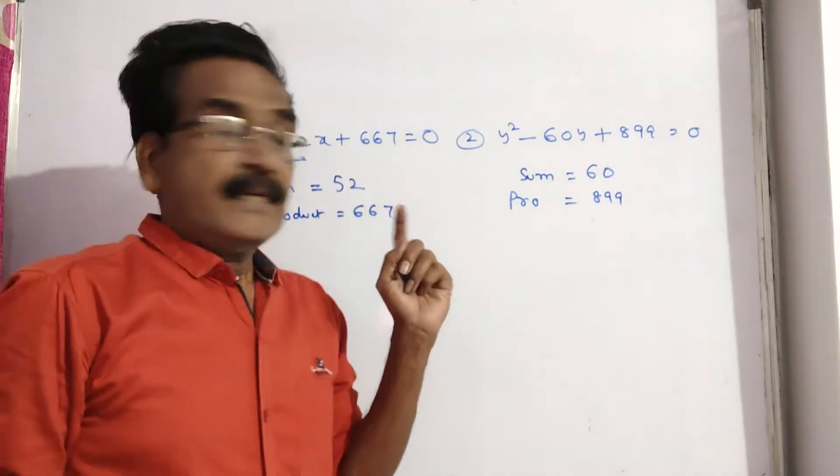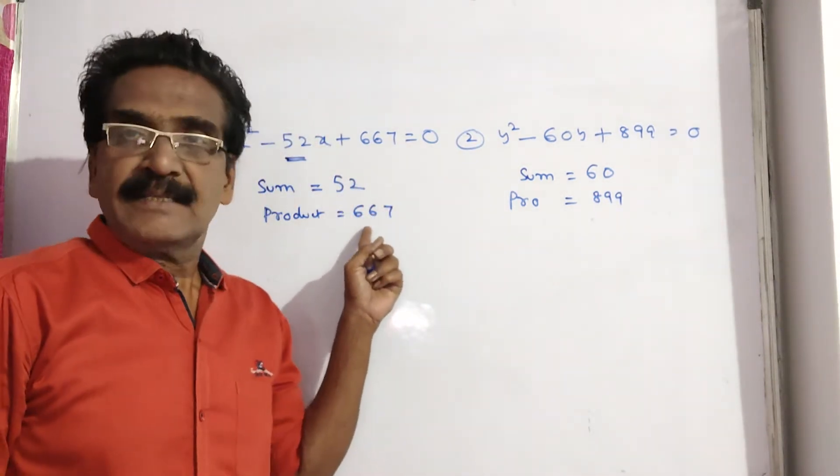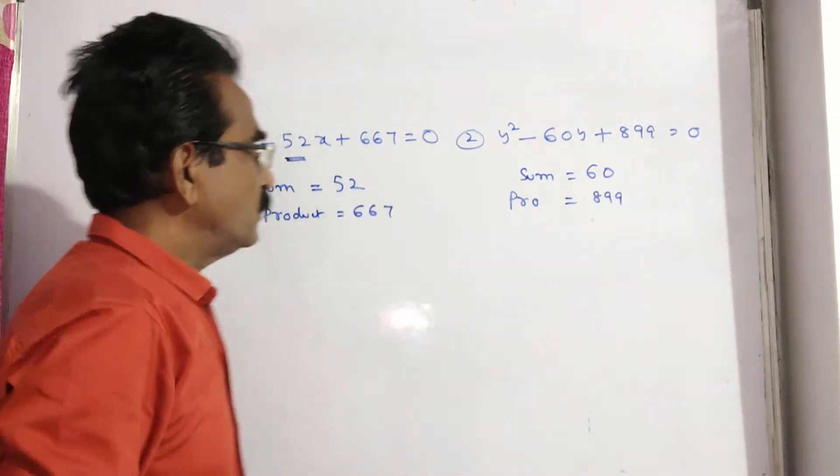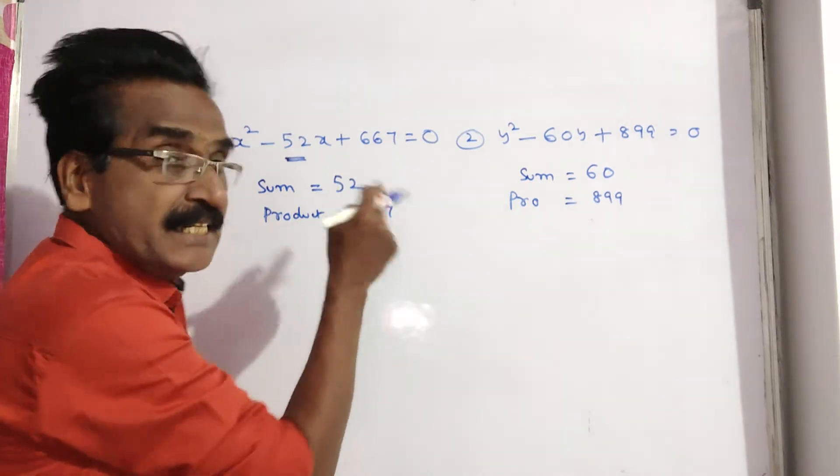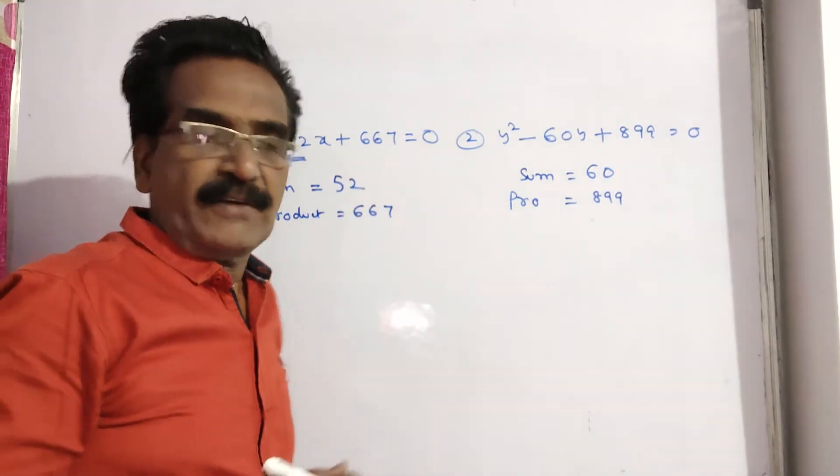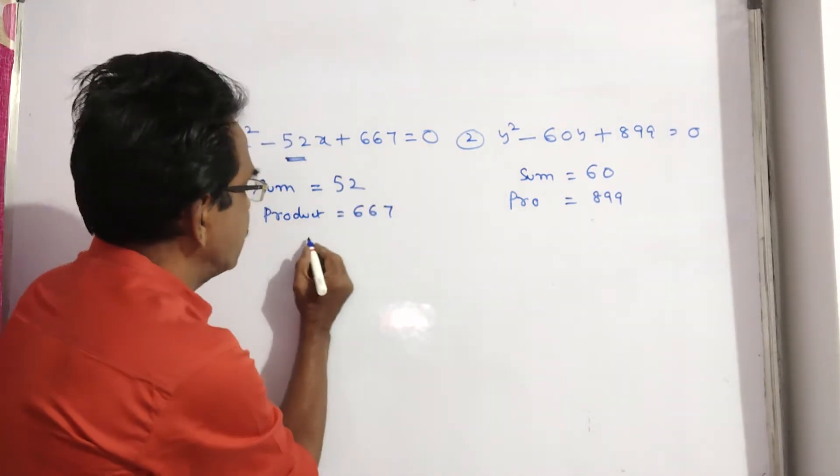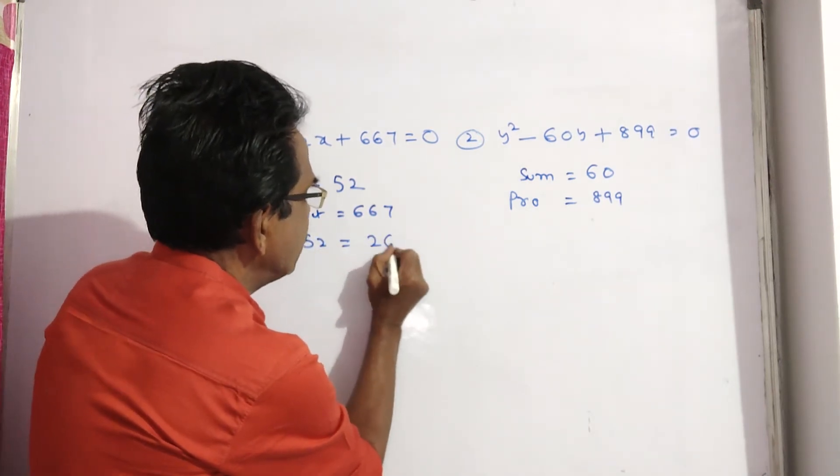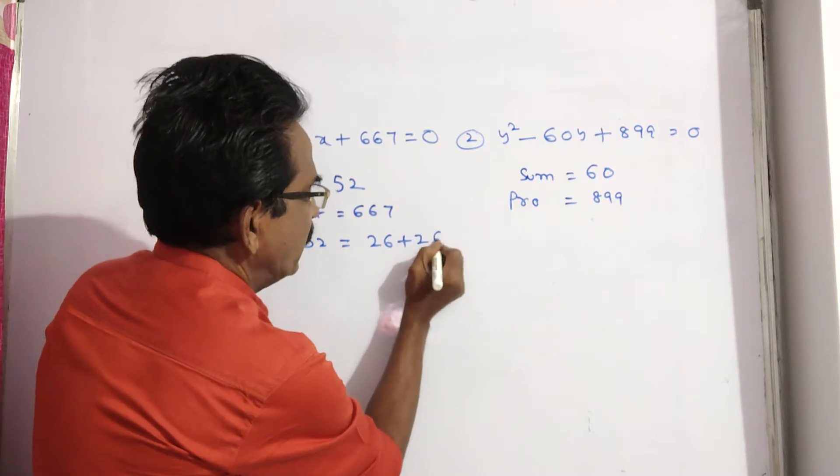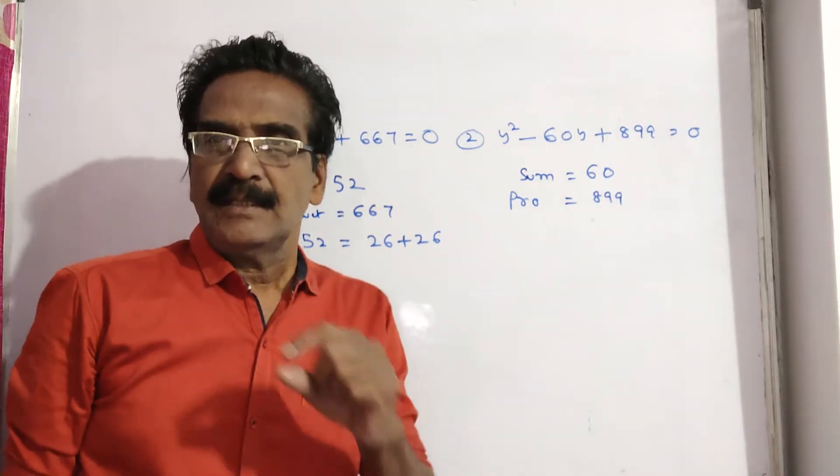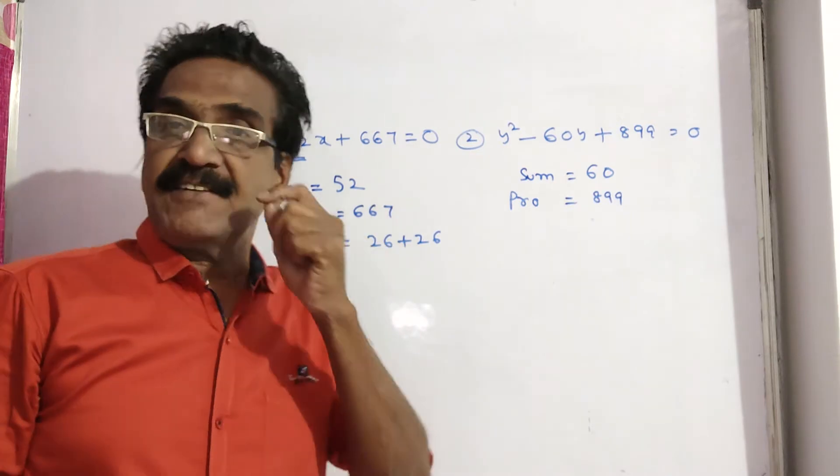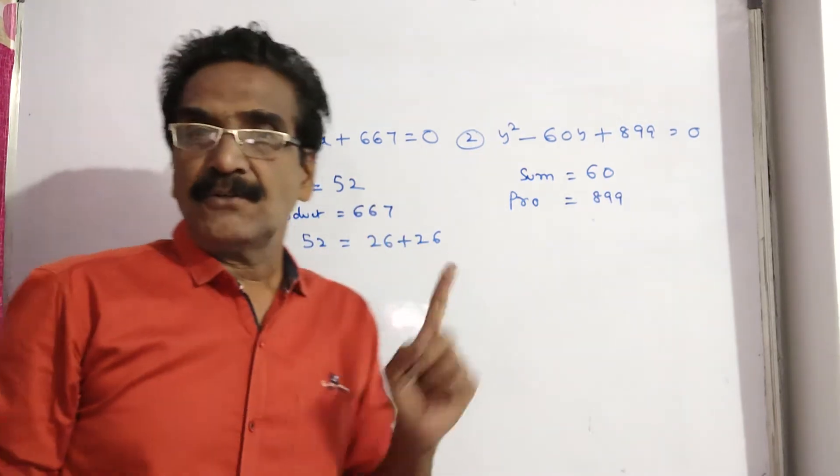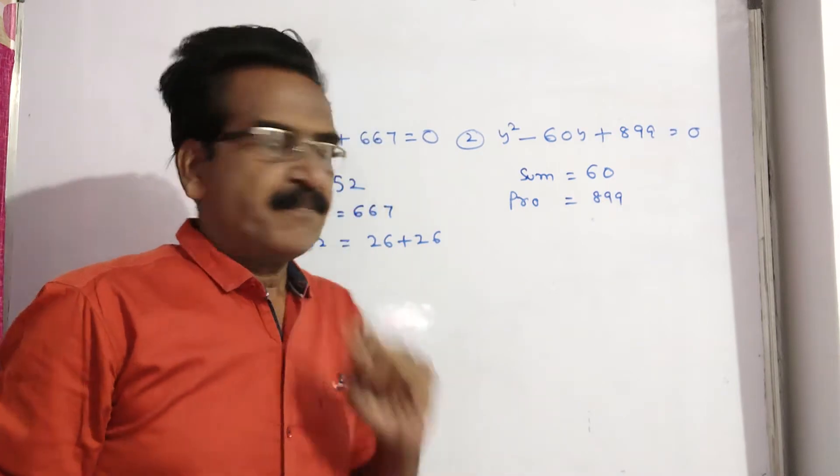Now, if you look at this number 667, this is somewhat closer to square of 26. What is 26 squared? 52 is equal to 26 plus 26. Here, 667 is closer to 26, but 26 into 26 is 676.